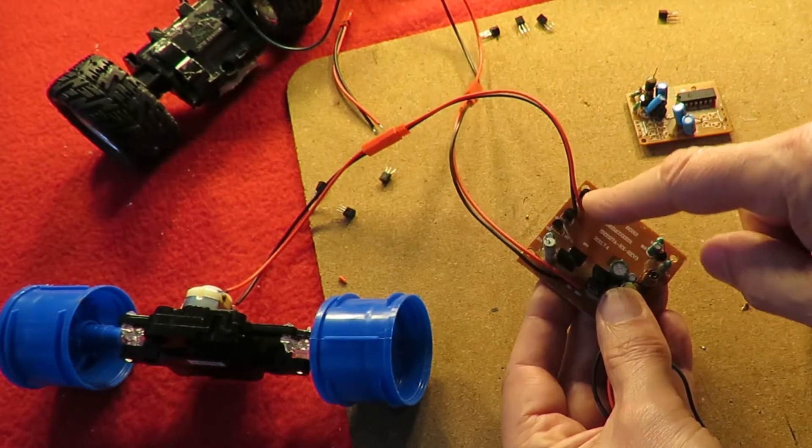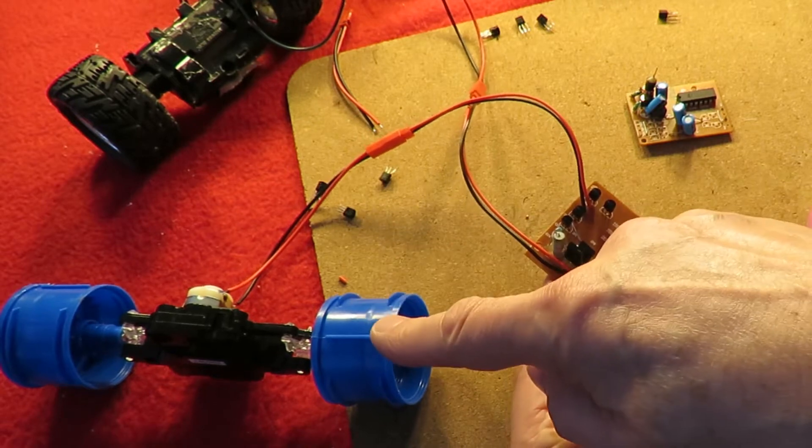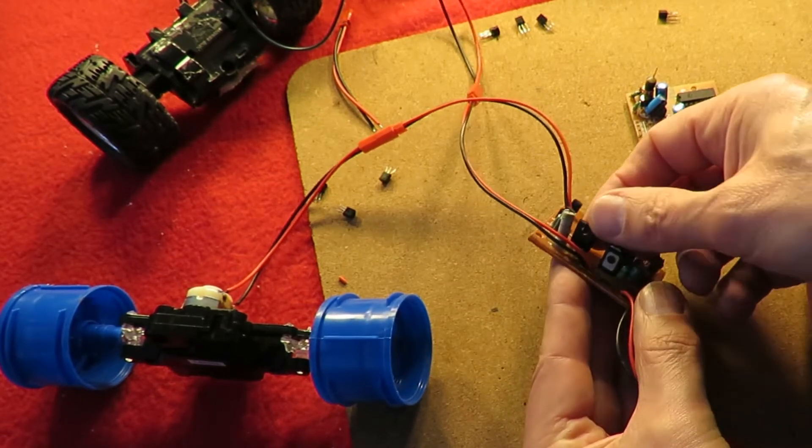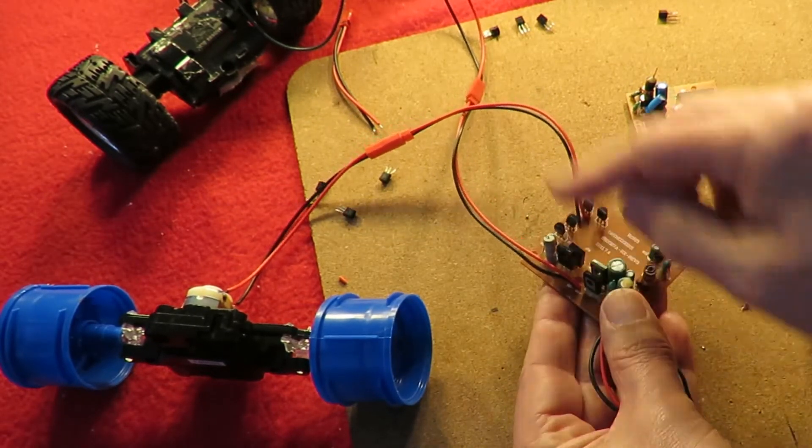So those four transistors there are the H-bridge for the steering motor and those nice beefy looking ones are the H-bridge for the drive motor.